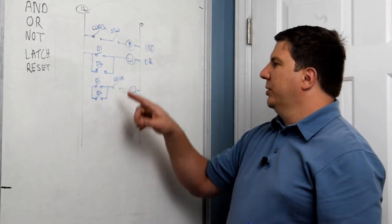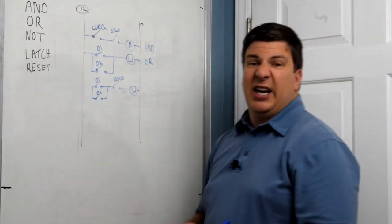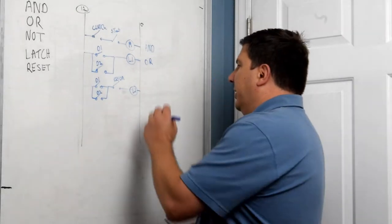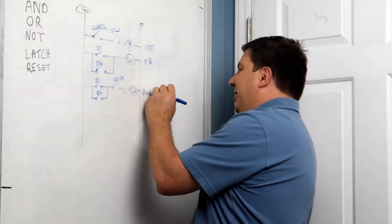So door one or door two and my key has to be in a certain position to do that. And I can have multiple positions that the key would be on. That's an AND and an OR.